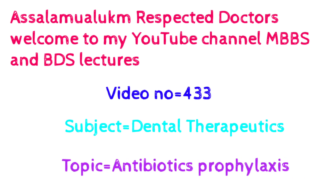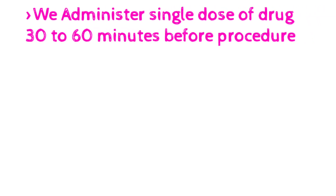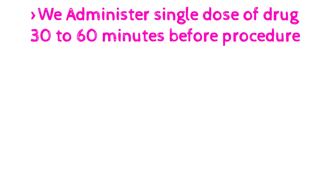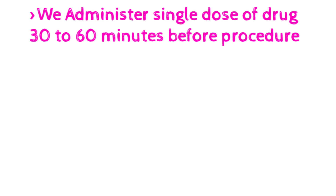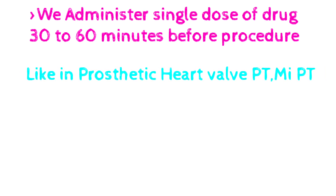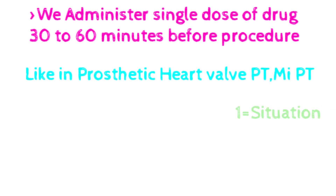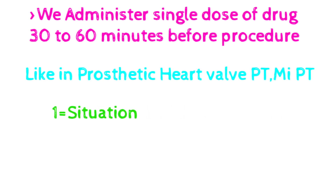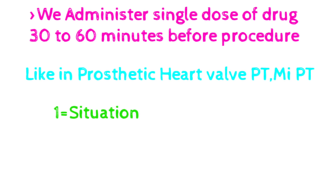In the first video we already covered antibiotics used in abscess, pericoronitis, necrotizing ulcerative gingivitis, and sinusitis. This is the third video on antibiotic prophylaxis — where we administer a single dose of drug 30 to 60 minutes before a procedure, such as in prosthetic heart valve patients or MI patients, to prevent infective endocarditis.